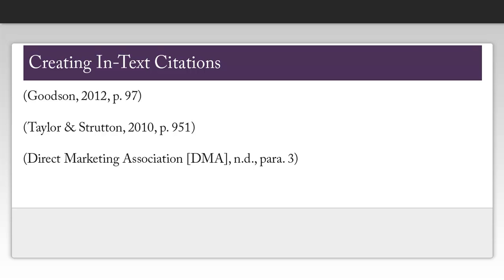In addition to citing your sources at the end of your paper, you also need to cite them throughout your paper. In order to do this, you need the author names, the date, and the page number for the source you're citing. Notice that before the page number, I just have the letter p. For the Direct Marketing Association, I added DMA in brackets so that each subsequent time I cite this source, I can just use DMA in my in-text citation. For documents without pages, you can indicate paragraph number by using PARA.